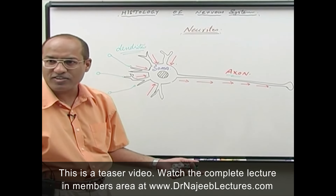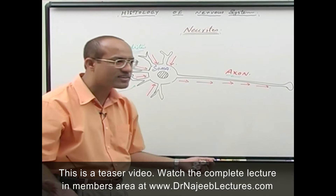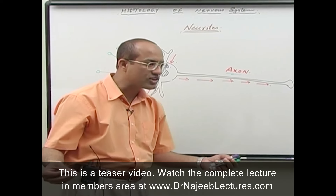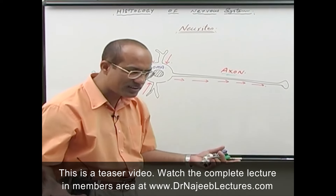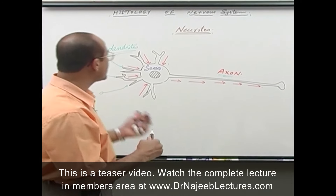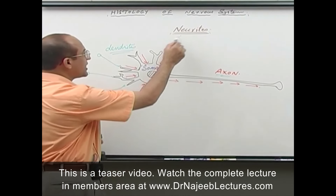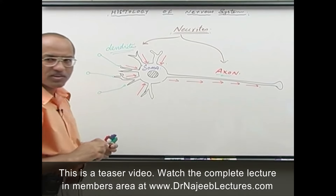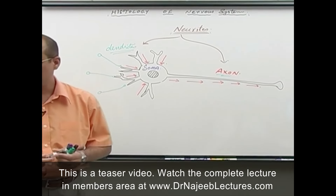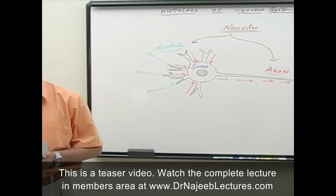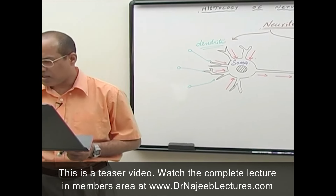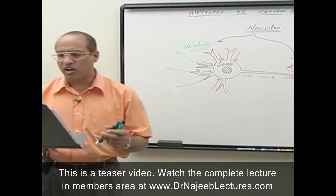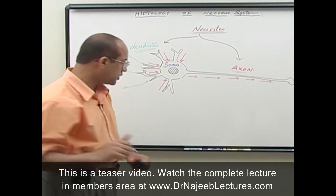Neurites are all extensions from the neuronal cell body. There are two types of neurites: dendrites and axons. Now we come to the morphological classification of neurons.